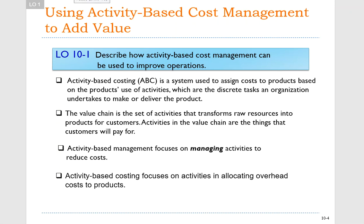Activity-based costing is a system used to assign cost to products based on a product's use of activities, which are the discrete tasks an organization undertakes to make or deliver a particular product. Activity-based costing focused on factory work or the production of our product, while activity-based management is going to focus on the non-factory side of our business, with the goal of managing activities to reduce costs and improve profitability.